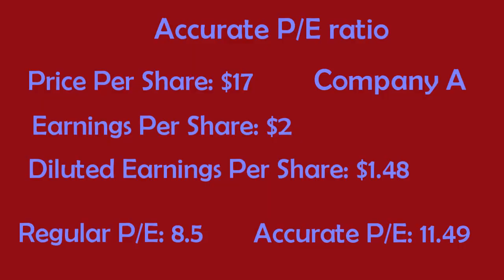With the new EPS, let's find out the new price-to-earnings ratio. Going back to the previous video's example, let's assume Company A is priced at $17. Its regular P/E ratio is 8.5. However, diluted EPS is a better representation because warrants, options, and convertibles can be exercised anytime.